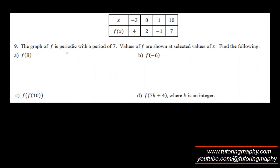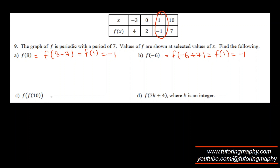Next problem: a periodic function with a period of 7 is given as a table. f of 8 equals f of 8 minus 7, which is f of 1, and f of 1 is negative 1. f of negative 6 equals f of negative 6 plus 7, which is also f of 1, which is negative 1. f of 10 equals f of 10 minus 7, which is f of 3.